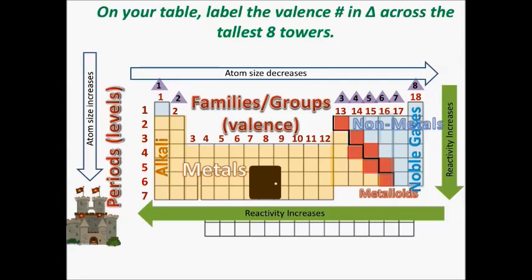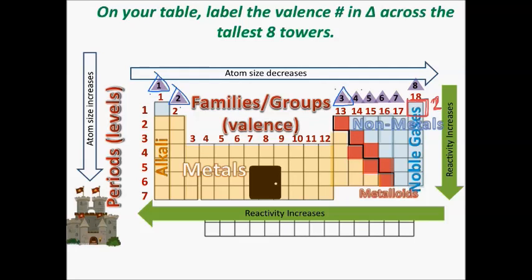The last thing to talk about is valence electrons, which help organize the families. On your table, draw triangles at the top of each family and number them: family 1 has 1 valence electron, family 2 has 2, family 13 has 3, family 14 has 4, and so on up to 18. There is one exception — helium. Even though it's in family 18, it only has 2 valence electrons. It sits there because it's still very stable and acts like other elements in that family, but it's the one exception you'll find on the table.